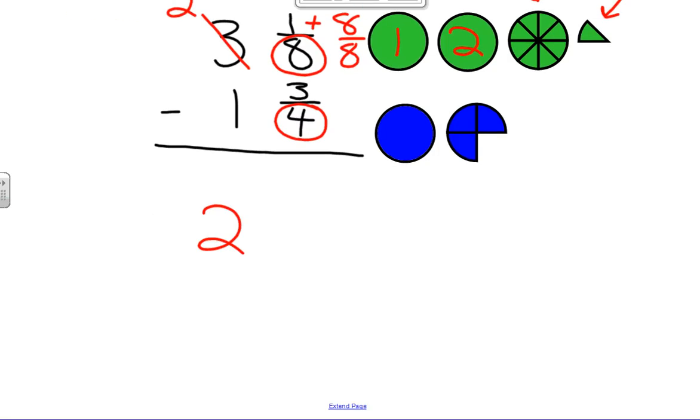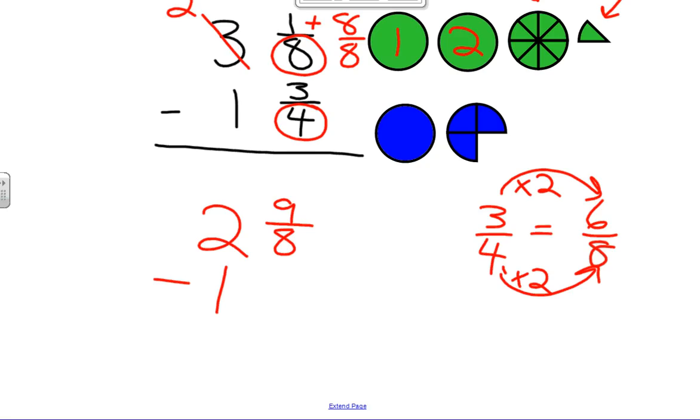So if I bring it down here, I'm going to have 2, well 8 plus 1 is 9 eighths. I'm now writing it as an improper fraction. And I'm going to still subtract 1 and 3 fourths. If we convert 3 fourths into a common denominator of eighths, of course I know that 4 times 2 equals 8. So 3 times 2 would give me 6 eighths. Again, if I looked up at my example, I know that 1 fourth is actually equal to 2 eighths from our lesson on equivalent fractions.